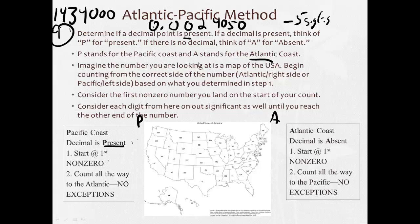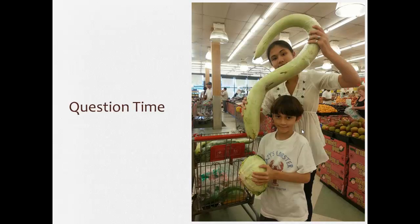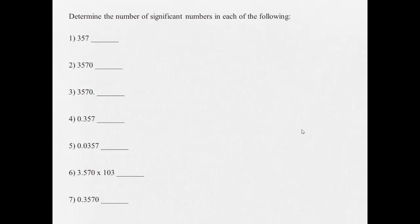You don't have to write all this word for word — just write down these shortcuts and they'll be helpful. Now it's question time: determine the number of significant figures in each of the following numbers. Use the Atlantic-Pacific method. One important trick: in example 3, a number like 23570. — the decimal point with nothing after it means that trailing zero is significant. Compare that to example 2 where there's no decimal and the trailing zero is not significant. Practice these and we'll go over them in class. See you at school!